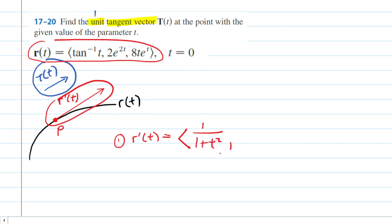And then the derivative of 2e to the 2t, well you would keep the 2, the constant multiple rule, and then you have the derivative of e to the 2t. You basically just recopy e to the 2t and then multiply by the derivative of that exponent. So the derivative of 2t of course is just 2.